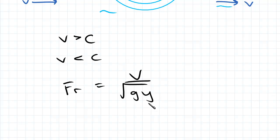In the previous video, we learned that c is equal to square root gy. So really the Froude number is comparing the speed of the fluid below with the speed of the surface wave.